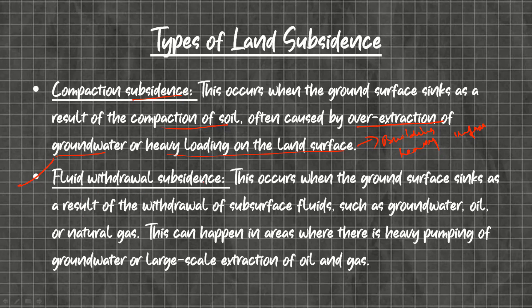The second type is fluid withdrawal subsidence. This occurs when the ground surface sinks as a result of withdrawal of subsurface fluids such as groundwater, oil, or natural gas. This can happen in areas where there is heavy pumping of groundwater or large-scale extraction of oil and gas, and is commonly seen in major cities.